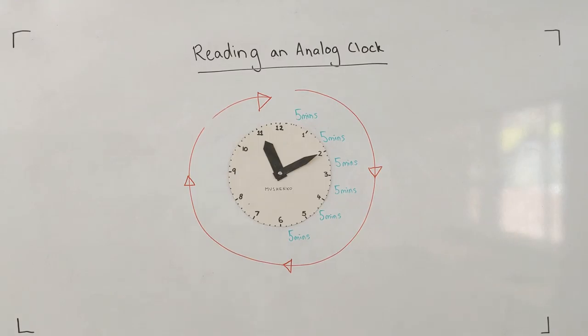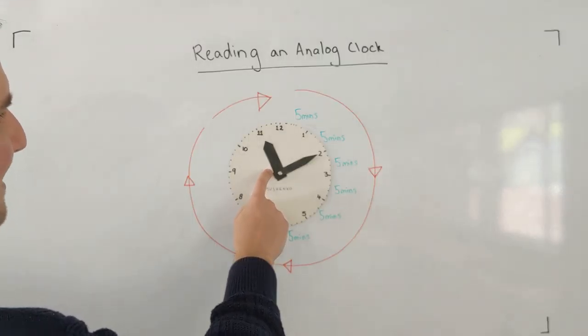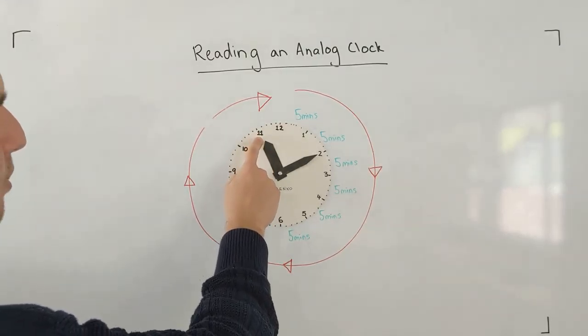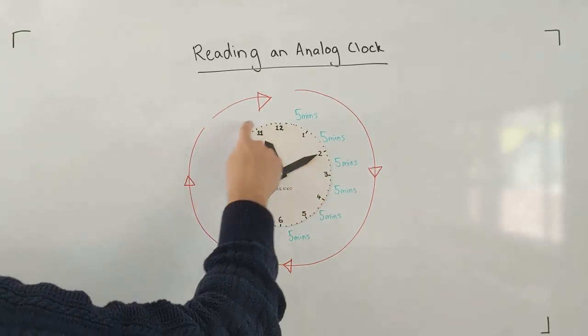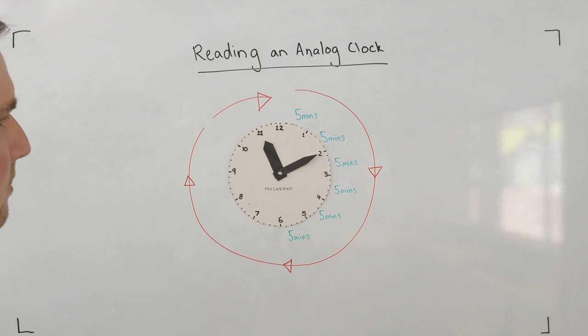Let's look at some more examples of reading an analog clock. So as always we start with our hour hand. The hour hand here is pointing at the 11 or maybe just a little bit past the 11 as it makes its way clockwise around the clock. So we're looking at 11 something.